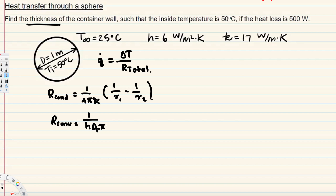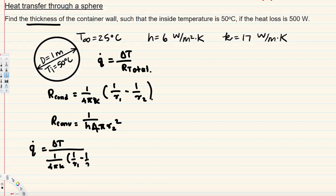Now all we have to do is plug these into the main equation. Q-dot equals delta T divided by the total resistance, which is: 1 over (4πk) times (1/r1 minus 1/r2) plus 1 over (h times 4πr2²).